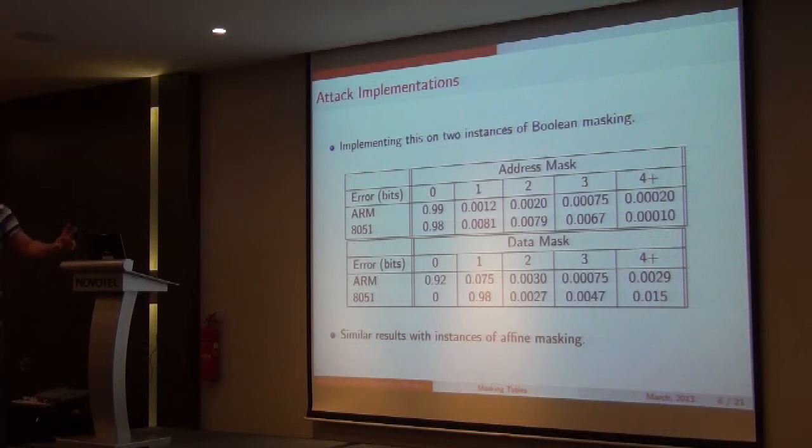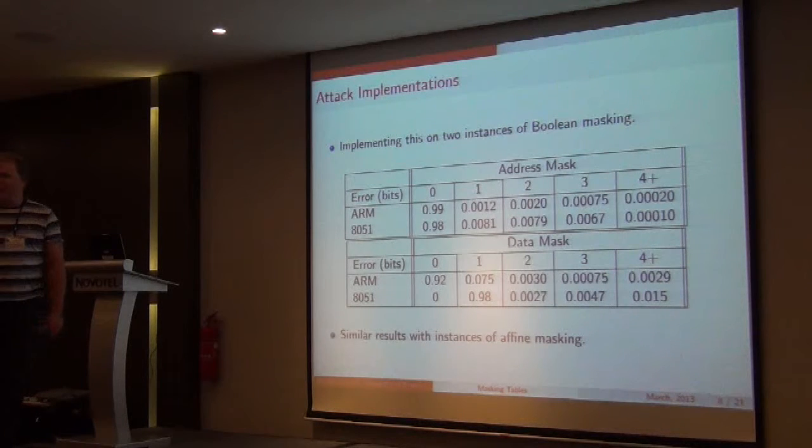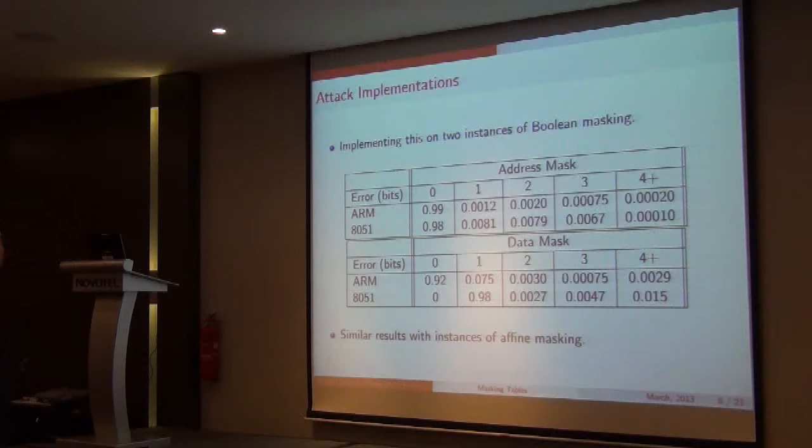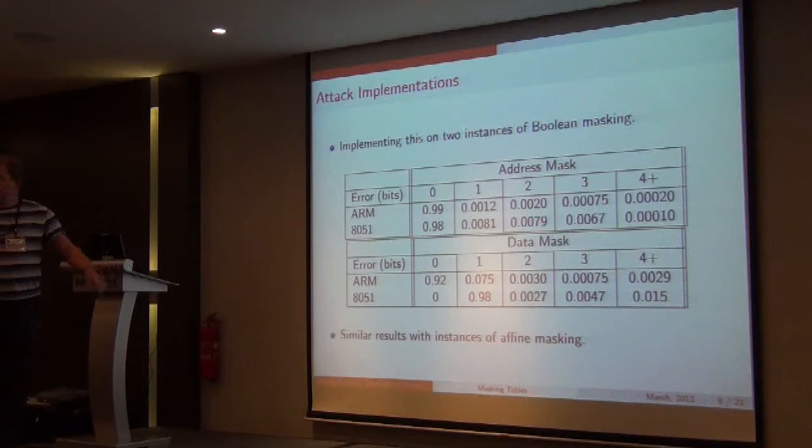So you can then pick out these into sub-traces and use those themselves to conduct a DPA attack on the mask values which will then allow us to conduct a DPA afterwards. So we have two implementations. One on an ARM7 microprocessor and one on an 8051 microprocessor. As you can see the mask recovery is almost perfect with this being a number of bits that are incorrect. For the address mask going in, we're getting it nearly always correct. Here for the data mask, always one bit wrong for some reason when we're completely unable to find it. But in any case, this completely removes the masking and you can conduct a standard DPA afterwards taking the mask values into account. And we have similar results for affine masking.